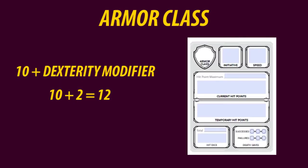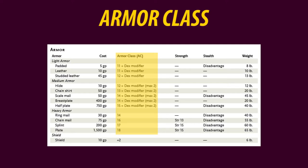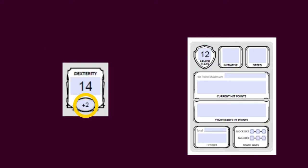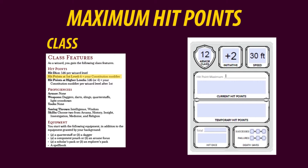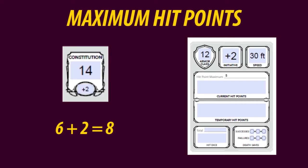Then it's time to decide our character's armor class. Because my character possesses no armor, my armor class is calculated by simply adding the dexterity modifier to 10, giving me an armor class of 10 + 2 = 12. If your character has armor, you simply check the armor table, and if you also have a shield, add 2 to your armor class. The initiative is the dexterity modifier — my character's initiative is +2. His speed is derived from his race; as an elf, Emanon can move 30 feet per turn. Maximum hit points for a wizard are 6 plus your constitution modifier — quick maths gives me 8.